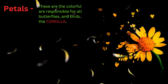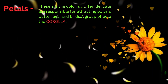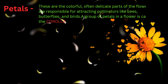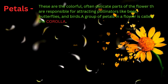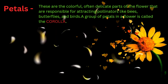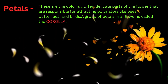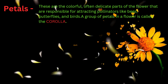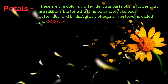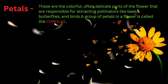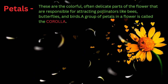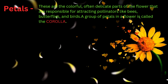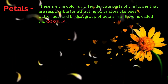Petals are the colourful, often delicate parts of the flower that are responsible for attracting pollinators like bees, butterflies, and birds. Petals surround the reproductive parts of the flower. A group of petals in a flower is called the corolla.